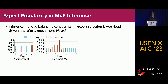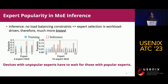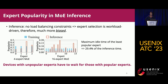For MOE inference, there is no load balancing loss applied, so expert popularity is purely data-driven. Empirically, the expert popularity is much more biased compared to the training stage, as shown by the blue bars in the figures. A few experts become extremely popular and process more tokens. In the current deployment, devices hosting unpopular experts must wait for those with popular experts to finish. In a 16-expert MOE model experiment, the device hosting the least popular expert has a maximum idle time of 29% of inference time, indicating large room for improvement.